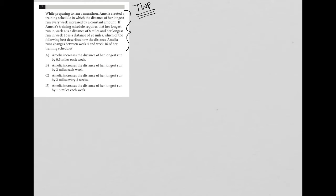So let's get started. The question says: While preparing to run a marathon, Amelia created a training schedule in which the distance of her longest run every week increased by a constant amount. Before I move on, it makes sense. She has a schedule and her long run increases by a constant amount, almost like a slope, right? Slope is a constant amount of increase.